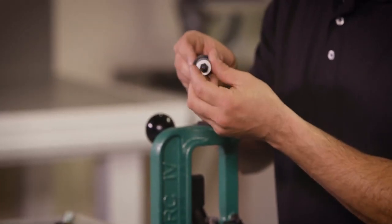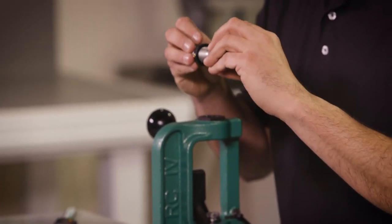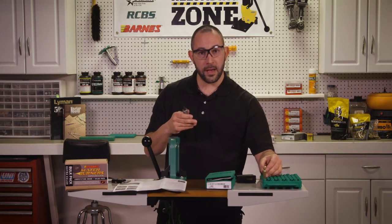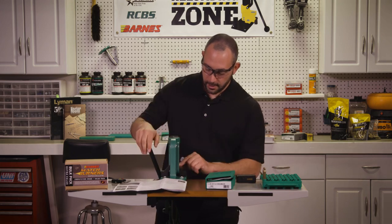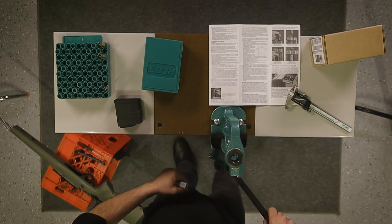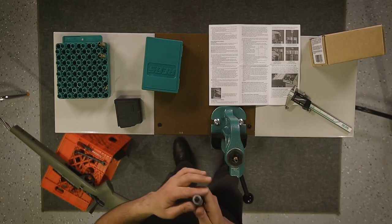Let's grab that die. So for a bolt action rifle, we generally set this up without any crimp. The way we're going to do that for this specific instance is we're going to take a case, place it in our shell holder, run it to the top of the stroke.